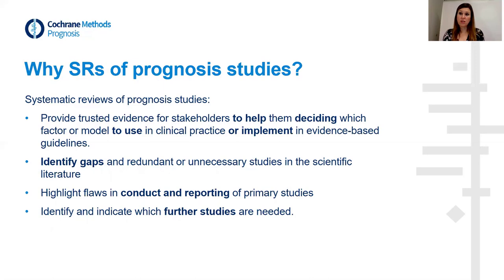So how do we use these systematic reviews? We now have an overview of all the information and an overview of the certainty of the evidence, and this can be used in clinical decision making. These systematic reviews provide trusted evidence for a wide variety of stakeholders to help them decide which factor or which model to use in clinical practice or to implement in evidence-based guidelines.